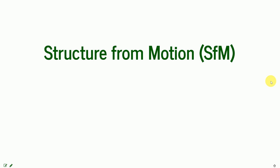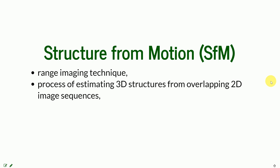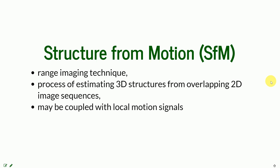This is done through the process called structure from motion. It's a range imaging technique that comes from computer vision concepts, and it's the process of estimating 3D structures from overlapping 2D image sequences. It may also be coupled with local motion signals. It sounds really complicated, but we're going to describe in simple terms what this technique actually does.